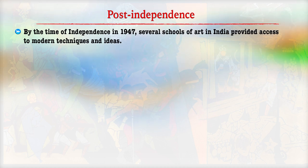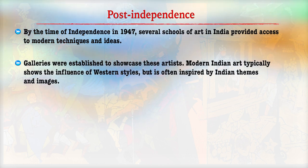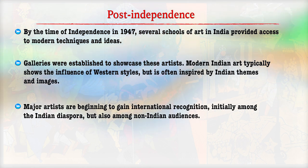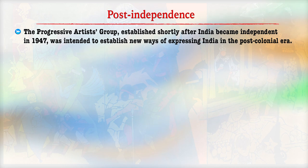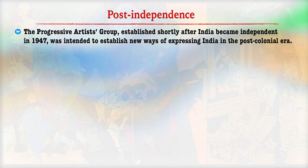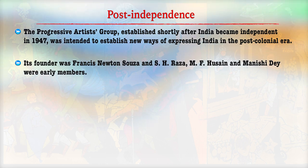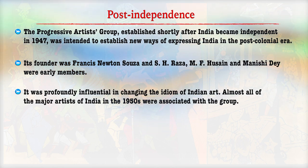By the time of independence in 1947, several schools of art in India provided access to modern techniques and ideas. Galleries were established to showcase these artists. Modern Indian art typically shows the influence of Western style but is often inspired by Indian themes and images. Major artists began to gain international recognition. The Progressive Artists' Group was established in India in 1947, intended to establish a new way of expressing India in the post-colonial era. Its founder was Francis Newton Souza, and S.H. Raza, M.F. Hussain, and Manish were early members.